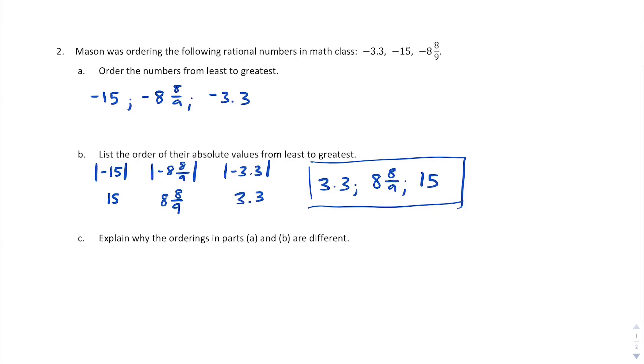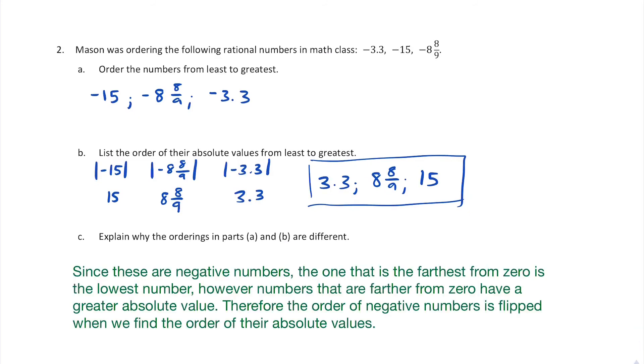Now explain, why do the orderings in part A and part B differ? Why are they different? Since these are negative numbers, the one that is the farthest from zero is the lowest number. However, numbers that are farther from zero have a greater absolute value. Therefore, the order of negative numbers is flipped when we find the order of their absolute values. Keep in mind that's only for negative numbers. When we list numbers that are positive from least to greatest, their absolute values do not change the order.